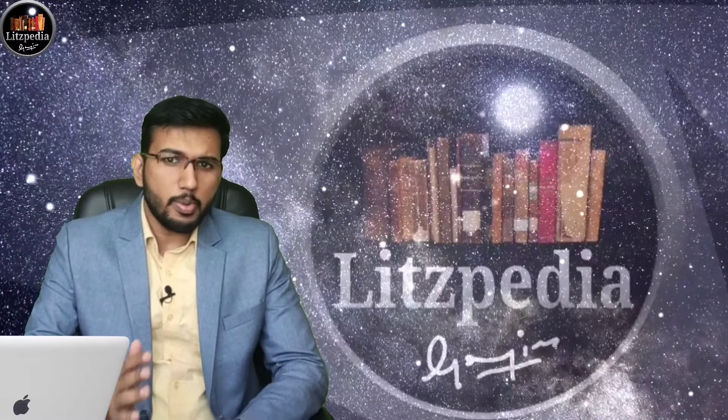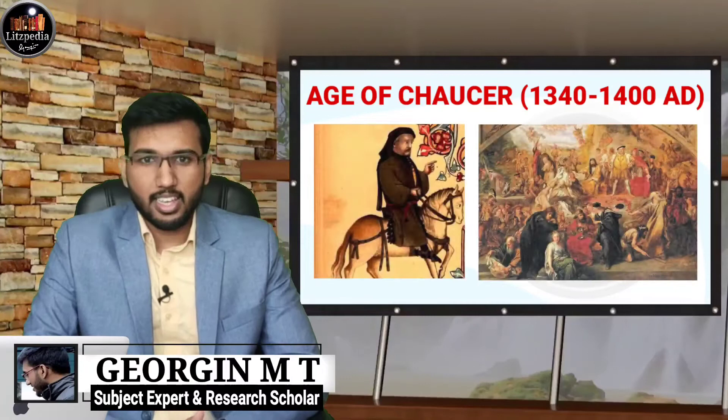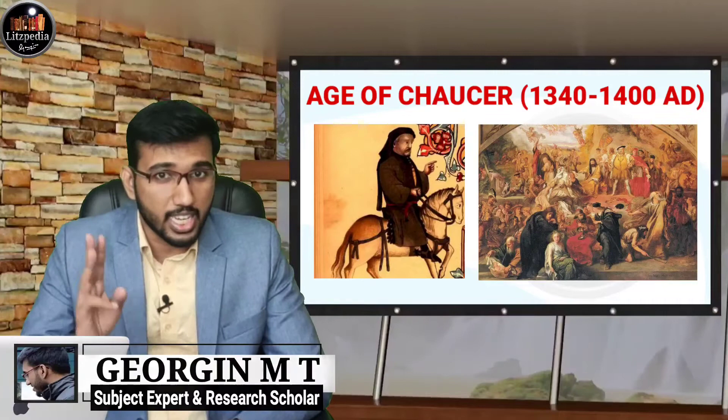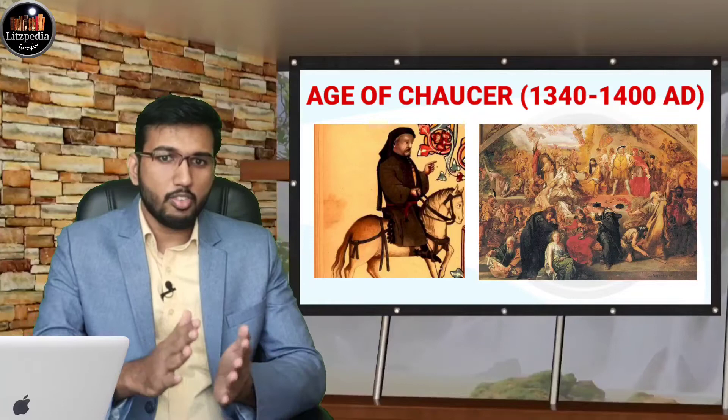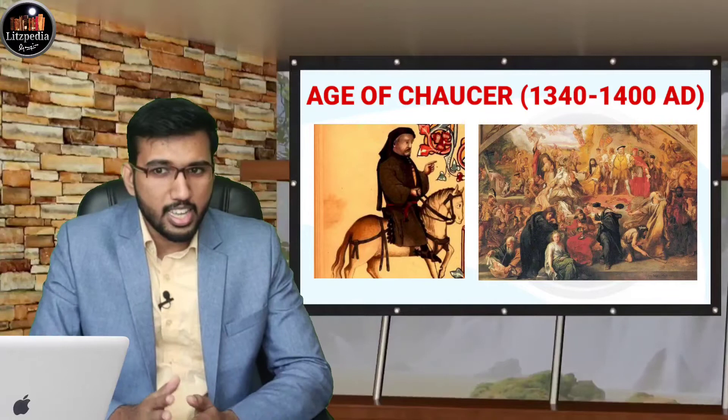During the previous lecture series on the Anglo-Norman period, we understood that the Middle English period is divided into three parts: before Chaucer, the Age of Chaucer, and the Age of Revival. Today we will be discussing the second part of the Middle English period, covering the historical background, major events, and important literary works during this time period.